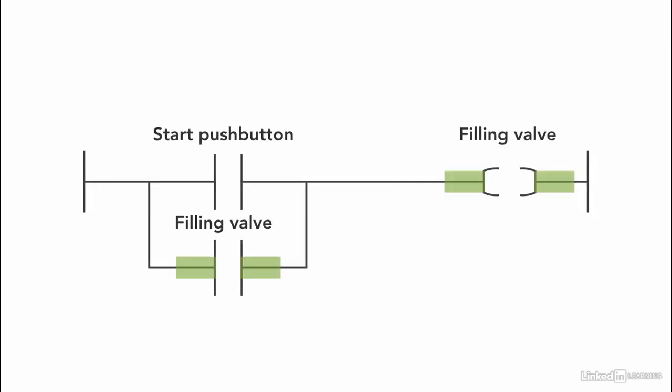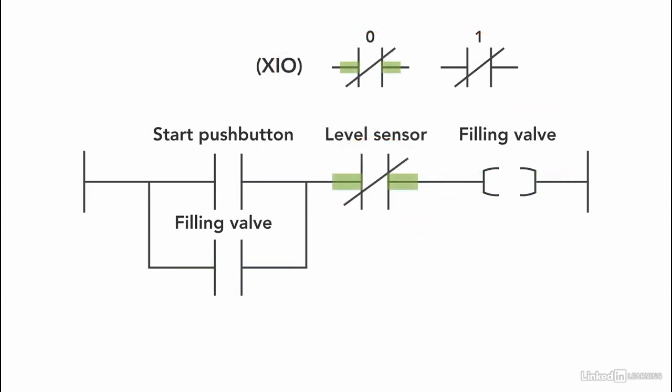So I'm going to use the instruction here. I need to choose an instruction that is highlighted when the memory location is 0 to keep the continuity. So we are going to use an XIO instruction for the level sensor. Remember that the instruction is highlighted and activated, but the physical sensor is not on. The level sensor has not reached the required level yet.